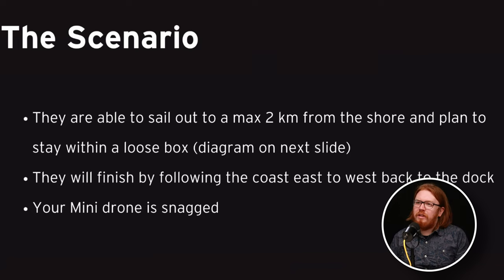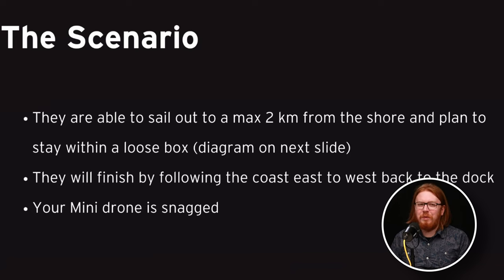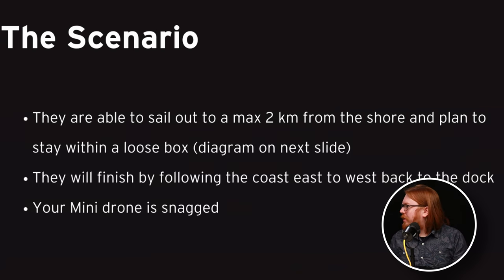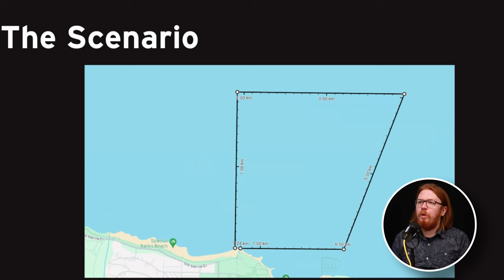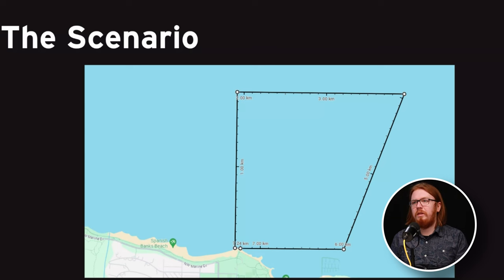Your mini drone is snagged — we'll see why that's a problem in a moment. There's the sailing club at the bottom, and the maximum extent the person can go in their boat. That doesn't necessarily mean the maximum extent the drone can go; this is just the maximum extent the person in the boat is going to go. This is their plan.